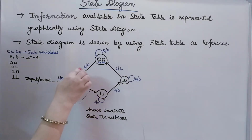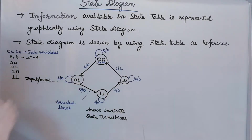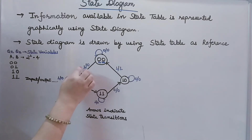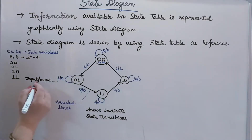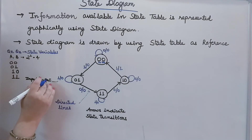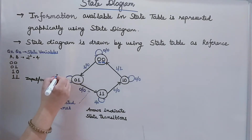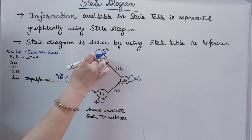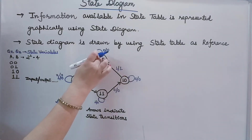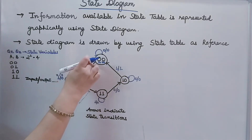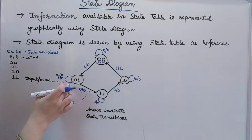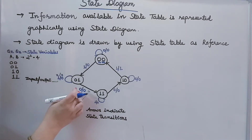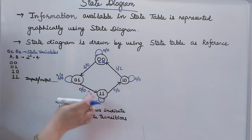What is written on the directed lines? This is indicating X and Y — that is, it is indicating input oblique output. X is my external input, and from this value of X I get my value of Y, that is my output. So this is a state transition from present state to next state for a given input and output. Every time you have some input and some output, there will be a state transition.